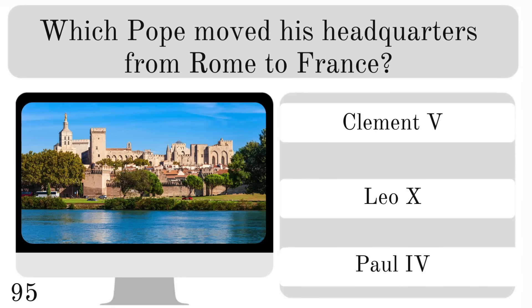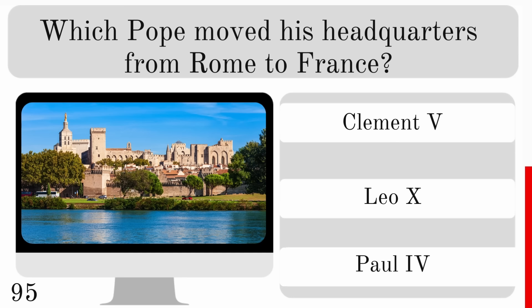Which Pope moved his headquarters from Rome to France? Was it Clement V, Leo X or Paul IV? And it was Clement V.